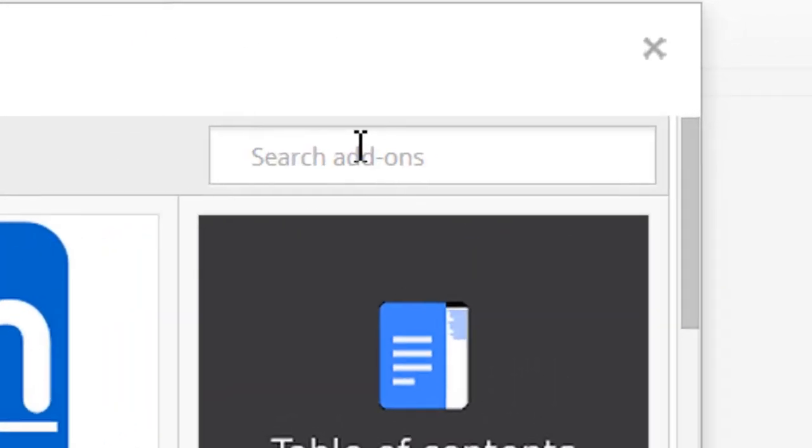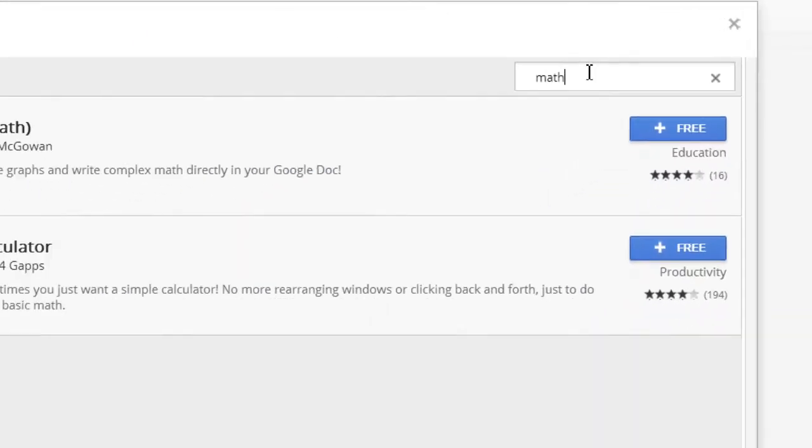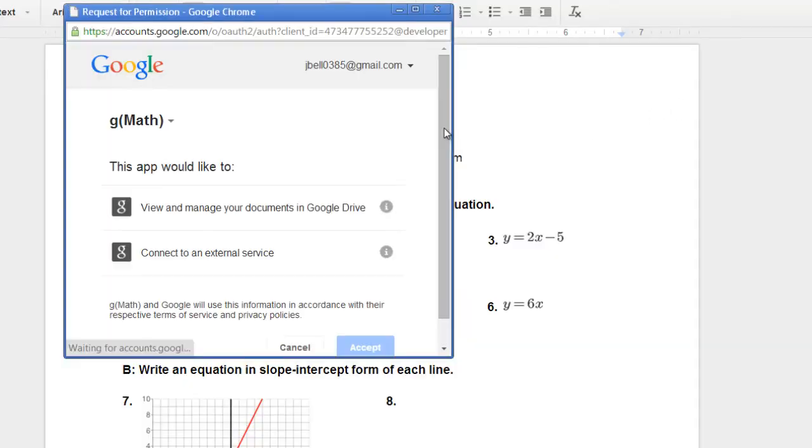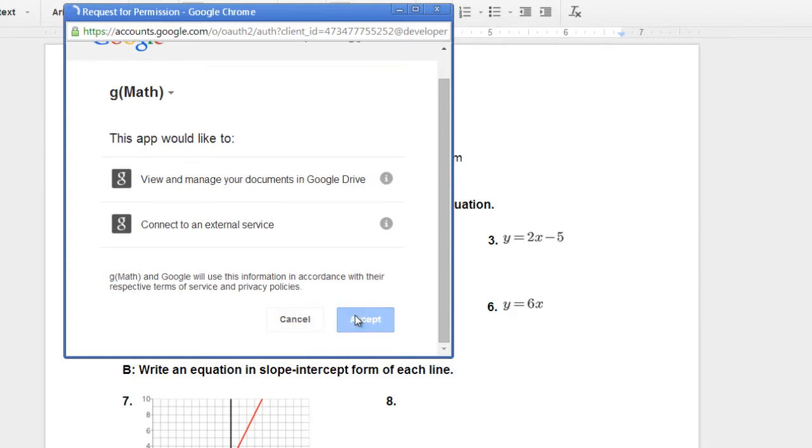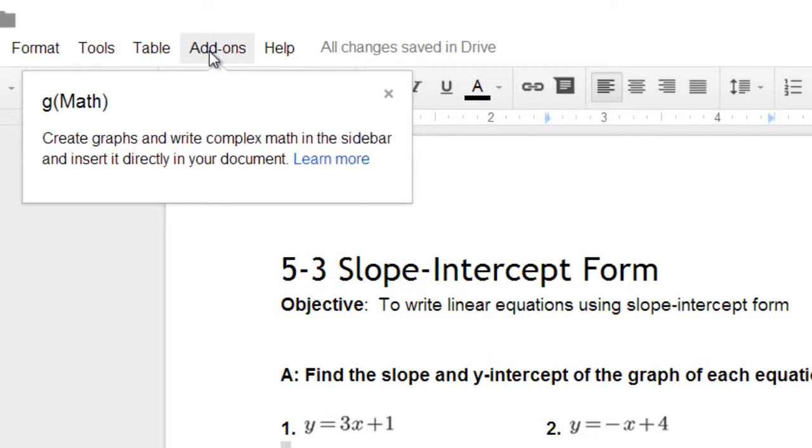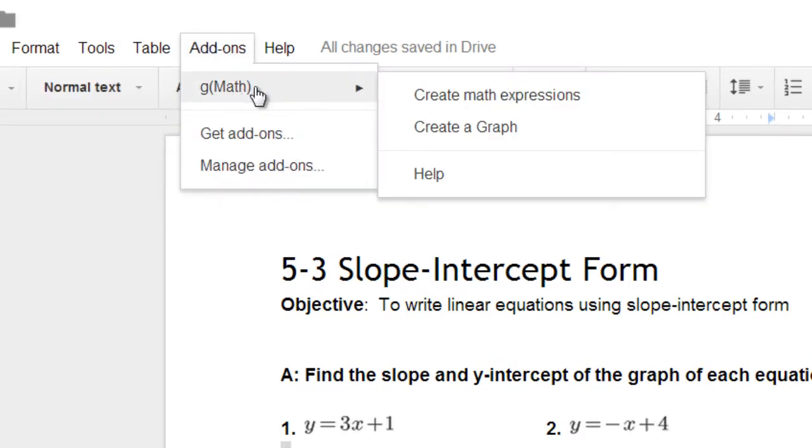Go over to the search and type in math or G-Math or something like that. And then this thing will pop up. So we want to install the G-Math, let it load up, accept all of the permissions. And then now you have it installed in your worksheet or your document.